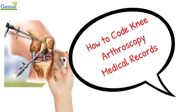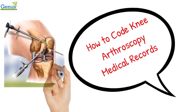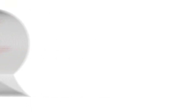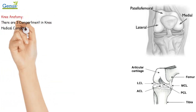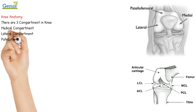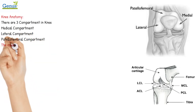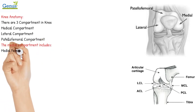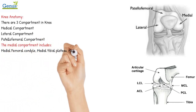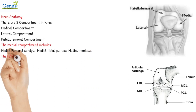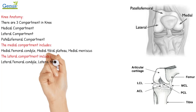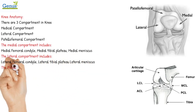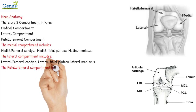There are three compartments in the knee: the medial compartment, the lateral compartment, and the patellofemoral compartment. The medial compartment includes the medial femoral condyle, medial tibial plateau, and medial meniscus. The lateral compartment includes the lateral femoral condyle, lateral tibial plateau, and lateral meniscus.